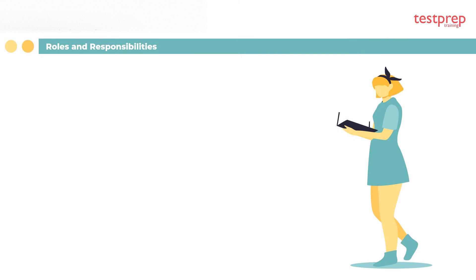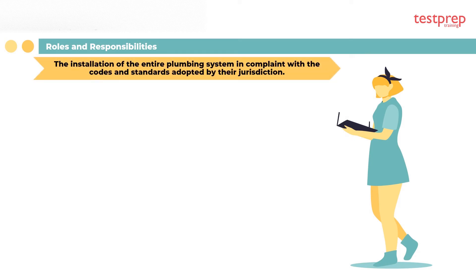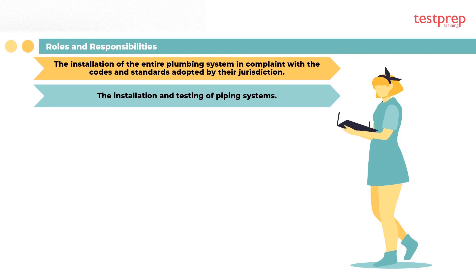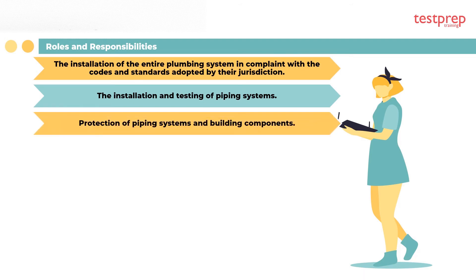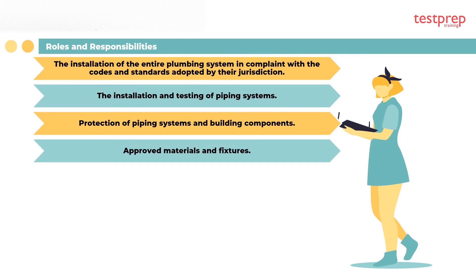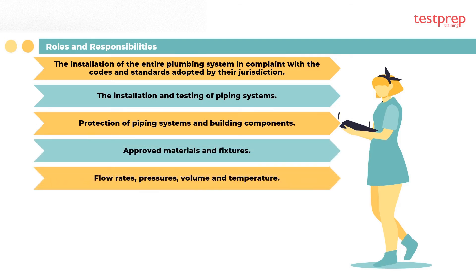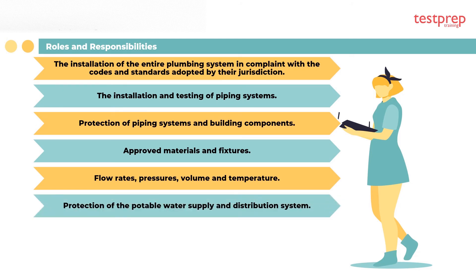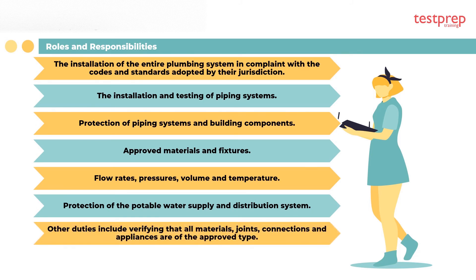Roles and responsibilities include: one, the installation of the entire plumbing system in compliance with the codes and standards adopted by their jurisdiction; two, the installation and testing of piping systems; three, protection of piping systems and building components; four, approved materials and fixtures; five, flow rates, pressures, volume, and temperature; six, protection of the potable water supply and distribution system.